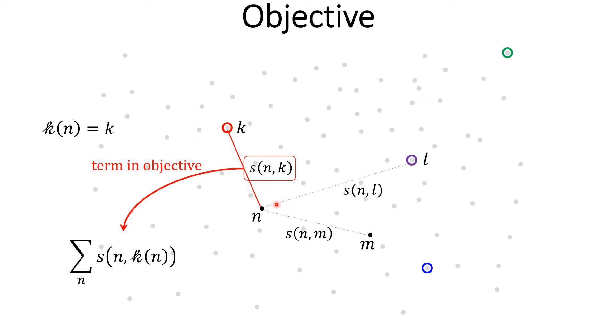The similarity S_nk is included in the objective. However, S_nl and S_nm are not included in the objective.